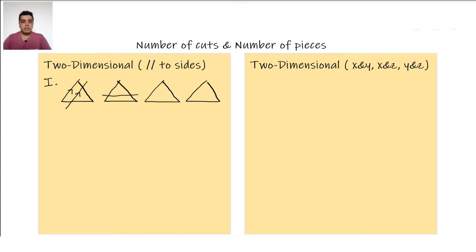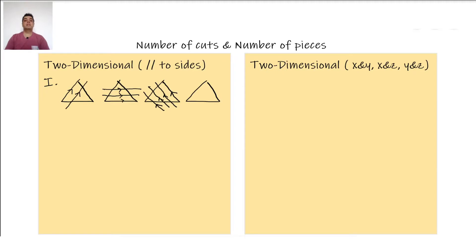In the second triangle, I am making two cuts — drawing two transversals or lines parallel to the second side. In the third case, I am making three cuts, drawn so that they appear parallel to the third side. And in the fourth triangle, I am increasing the number of lines and cuts just to understand how many parts or pieces would result.